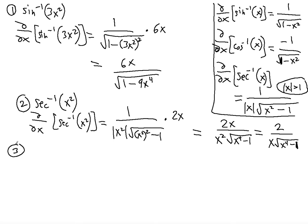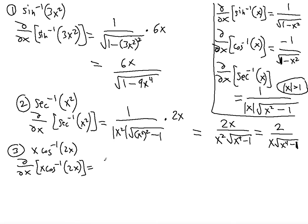The third example is similar but a little more difficult because we will have a product rule to deal with. The function is x times arc cosine of 2x. Using the product rule, we differentiate x first — x becomes 1 — so we get 1 times arc cosine of 2x, plus x times the derivative of arc cosine of 2x.